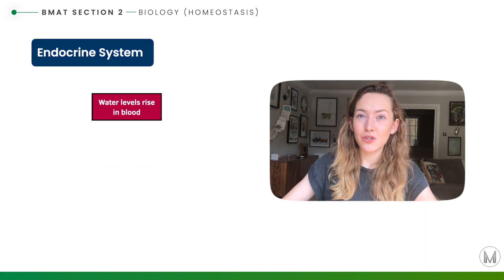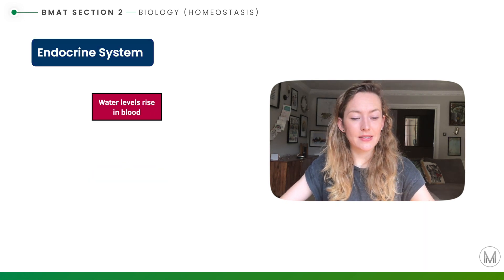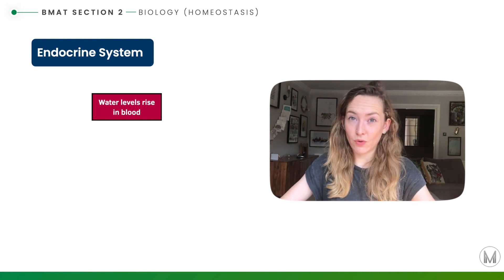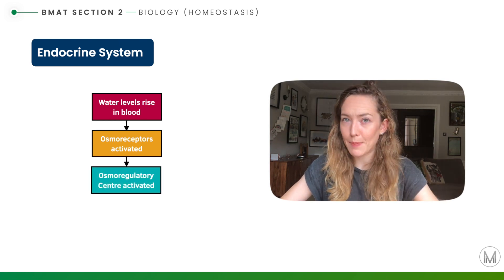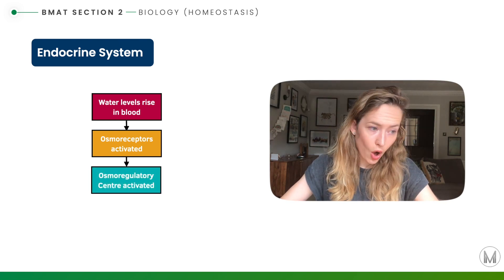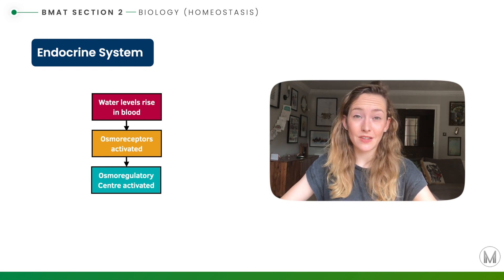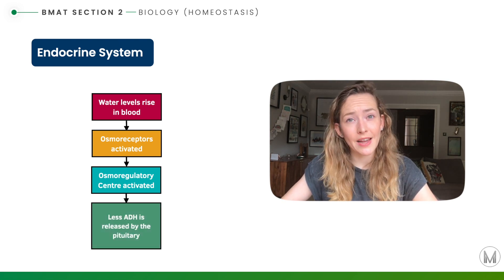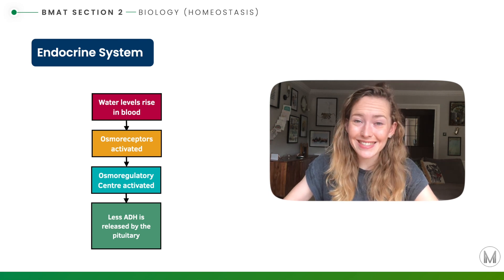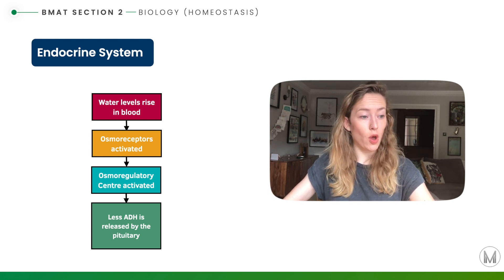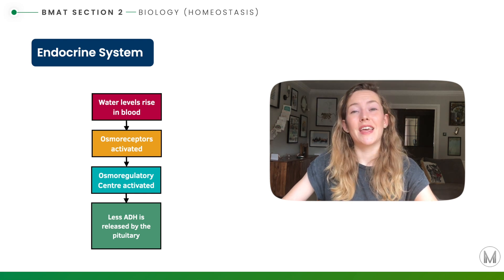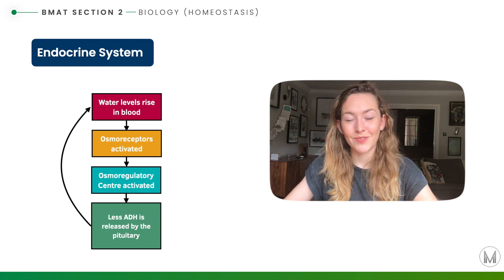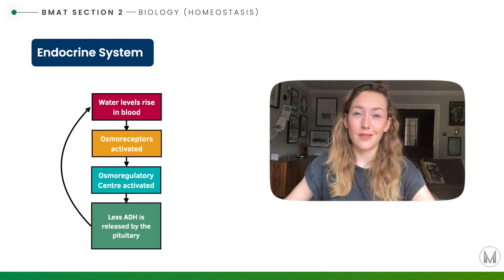An example of how the endocrine system maintains homeostasis: if water levels rise in our blood, our osmoreceptors — located in the hypothalamus in our brain — are going to notice that change. Our osmoregulatory centre will be activated and send a signal to the pituitary gland to release less ADH, antidiuretic hormone, into the bloodstream. This is going to reduce the water levels in our blood and maintain homeostasis.